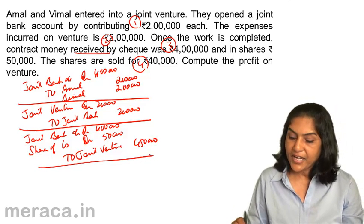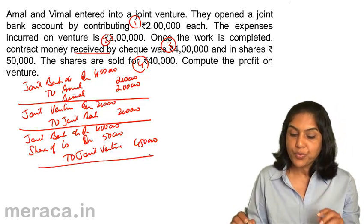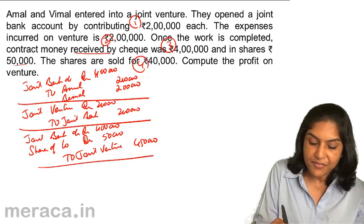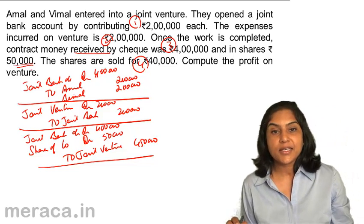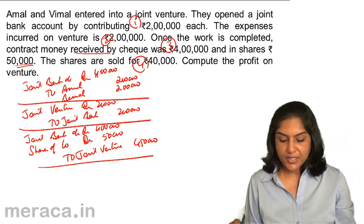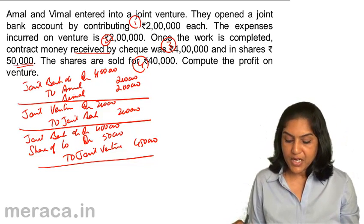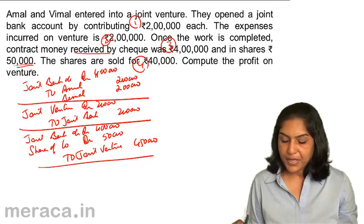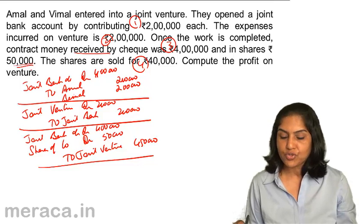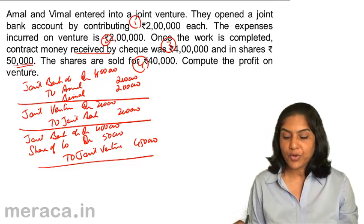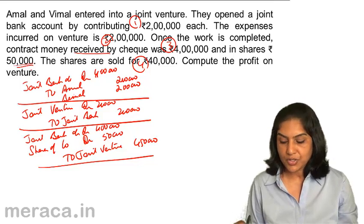The value at which we receive the shares is recorded as: joint bank account debit, shares of company account debit 50,000, and to joint venture 4 lakh 50,000.